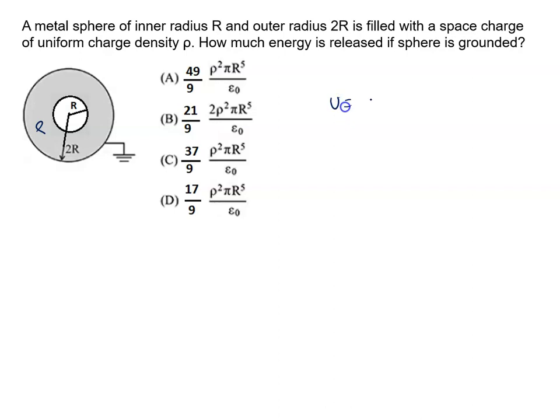So for the metal sphere, we all know very well self energy or energy stored formula is given by k q square by 2x, where x is the radius. Here I am going to write this formula: k is known as 1 upon 4 pi epsilon 0.